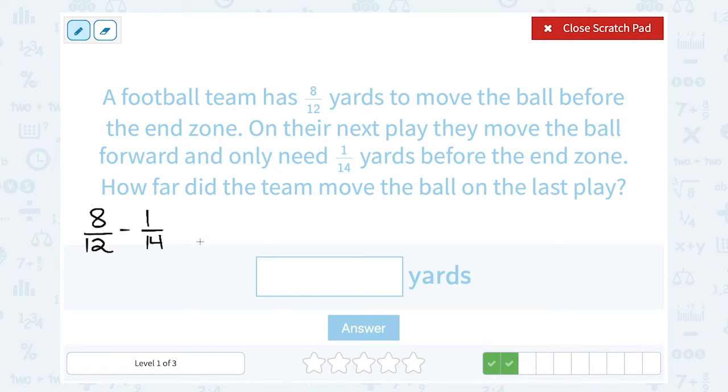Now this time, notice I do not have a common denominator. The denominator or the bottom of one fraction is 12, and the denominator or the bottom of the other is 14. So before I can subtract, I would need to find a common denominator. And the easiest way to find your common denominator is to think about the least common multiple.